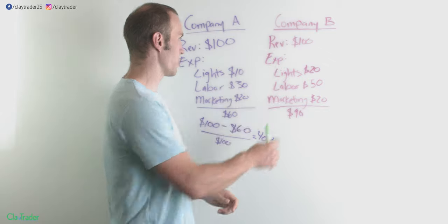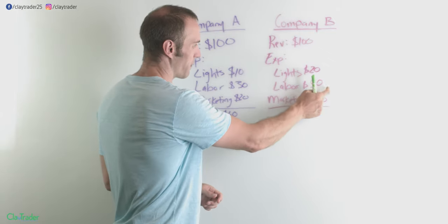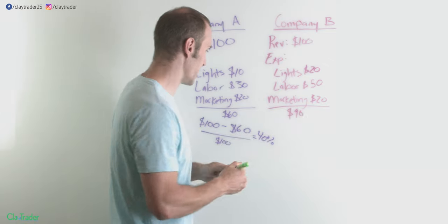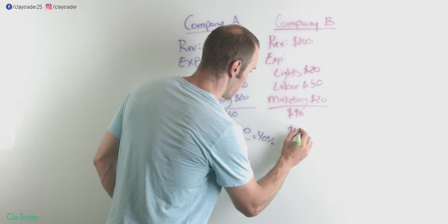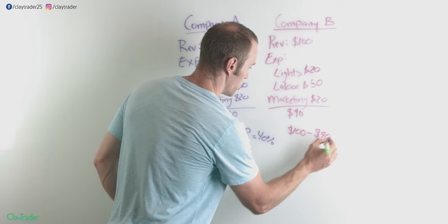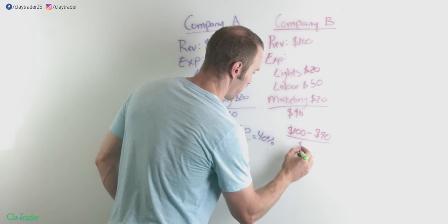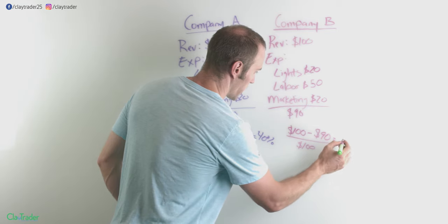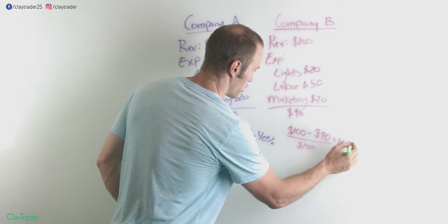Now let's look at company B. $100 revenue, so that's the same. Lights, 20. Labor, $50. Marketing, 20. So that brings a total of $90. So here you'd have, again, the revenue minus the expenses. And then you want to divide that by the revenue again, multiply it by 100, and that's going to give you 10%.